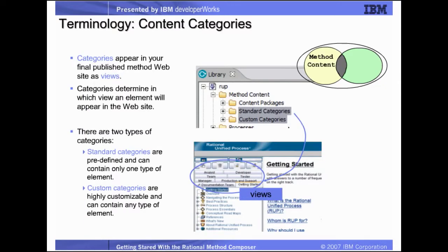The standard categories and custom categories folders are used to define how your published method website will look. Categories allow you to categorize content independent of its packaging — for example, in disciplines and role sets. In this introduction we won't elaborate on categories, but it's important to know that they are another way to help you organize and customize your method content. You may want to examine this topic later on your own.